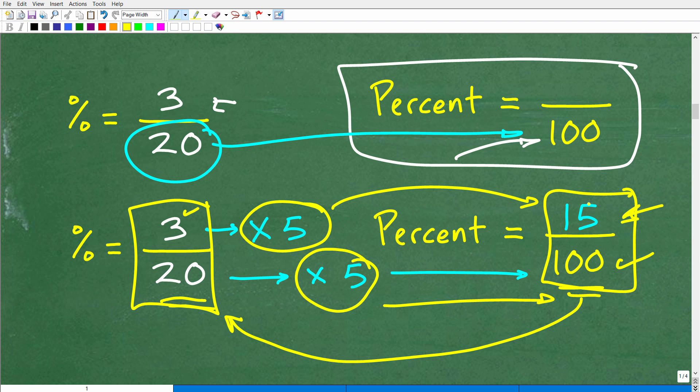But I like this version because I can easily see the answer here. 15 over 100. This is, by definition, the percent. 15 percent.